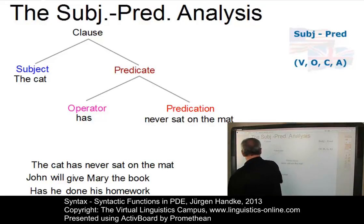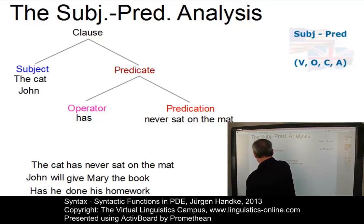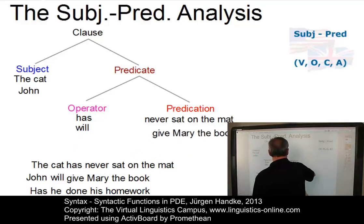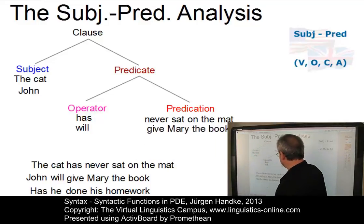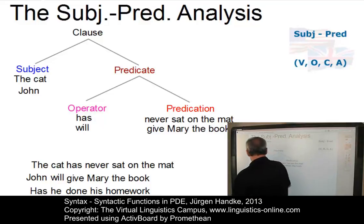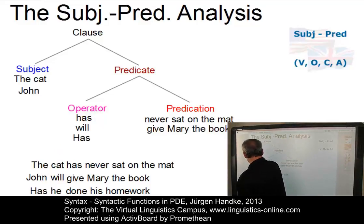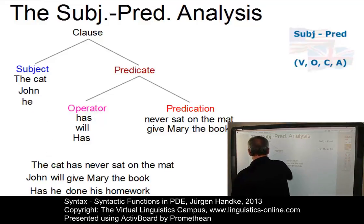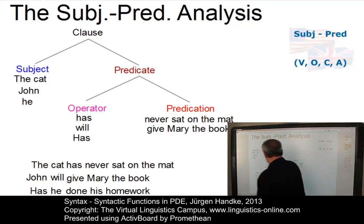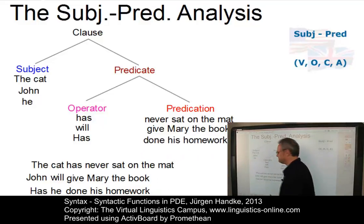John will give Mary the book. Again, the subject is easy to find: John. And then we have will as the operator, and give Mary the book is the predication. And finally, here we have an interrogative sentence. Has is, of course, the operator here, so you see the sequence of subject and operator has been reversed. And done his homework is, of course, the predication.